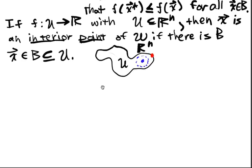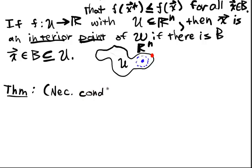So now let's state our first order conditions, the fact that it's a necessary condition. So theorem: this is a necessary condition for min or max.